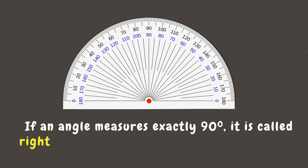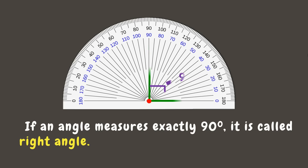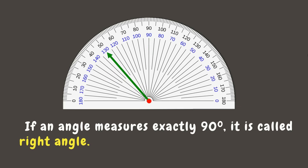If an angle measures exactly 90 degrees, then it is called a right angle. As you can notice, a right angle forms an L-shaped angle. Let's try on the other side — this one is also a 90 degree angle, therefore it is a right angle.